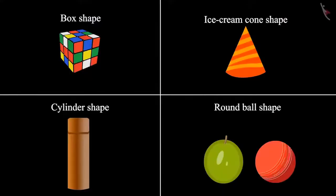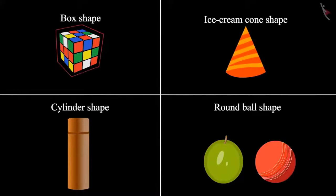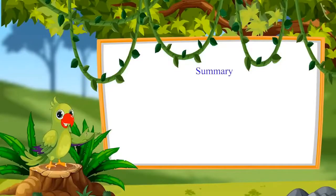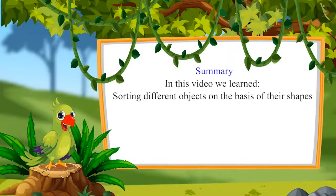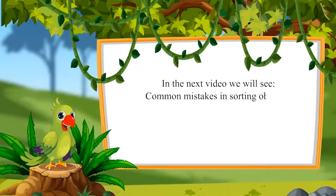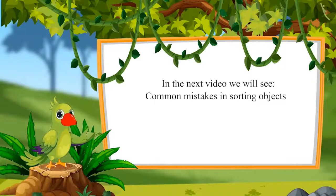So children, did you see how Chotu and Neha identified four different shapes and kept them in different boxes: round ball shape, ice cream cone-like shape, box-like shape, and cylinder shape? That was all for today. In this video, we learned sorting different objects on the basis of their shapes. In the next video, we will see some common mistakes in sorting objects. Till then, bye children.